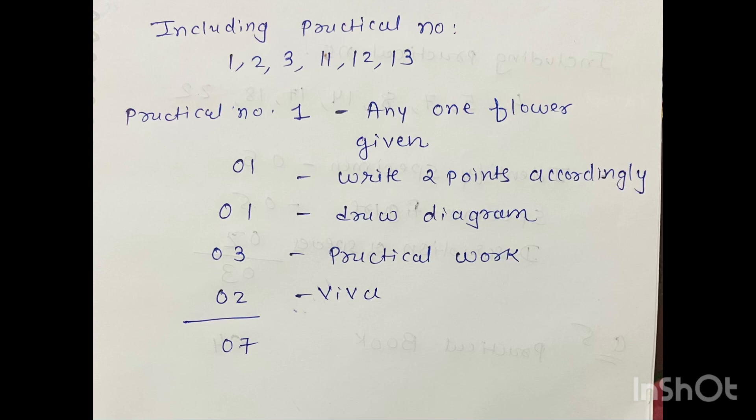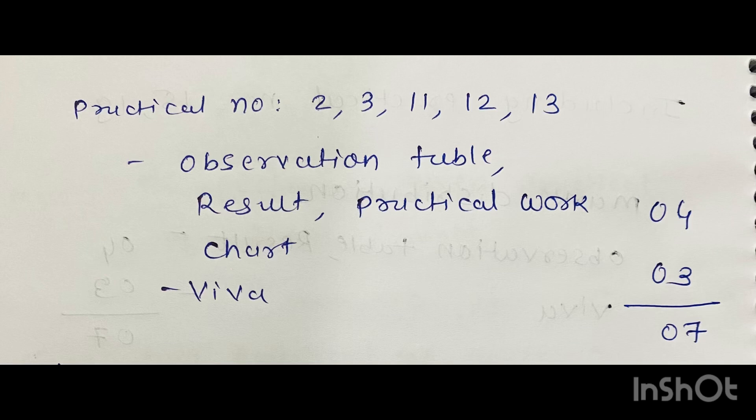viva, so total it carries seven marks. If practical numbers 2, 3, 11, 12, and 13 are asked, then four marks for your observation table, result, and practical work or chart, and three marks for viva. Total will be seven.